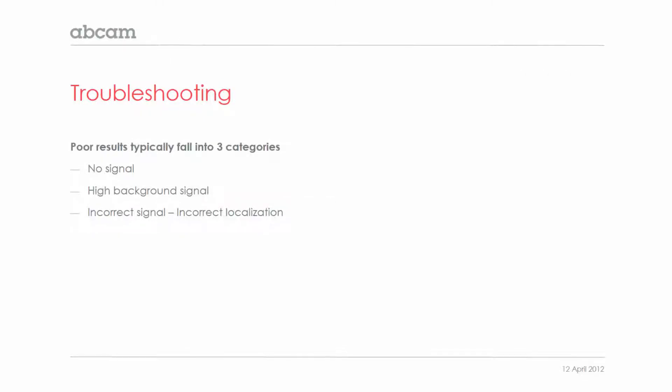There are three main problems you can get in ICC. Perhaps you might have no signal at all in your sample, you might have high background with lots of fluorescence, or you may have an incorrect signal — you've got it in your cell, but it's not at the localisation that you're expecting. What can we do about these?